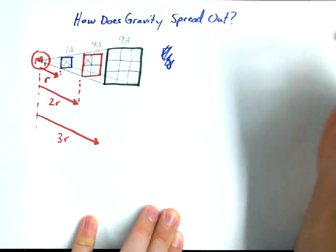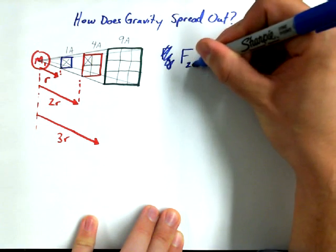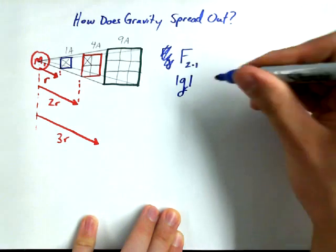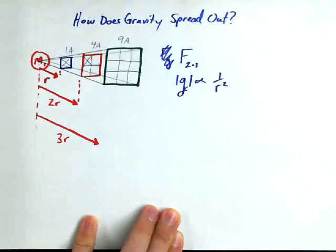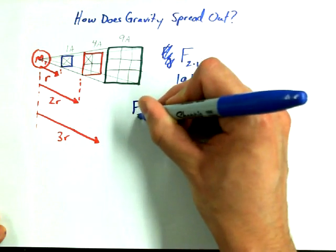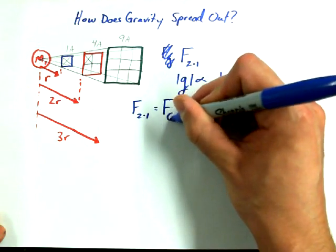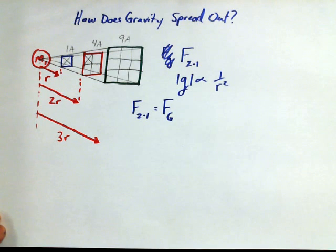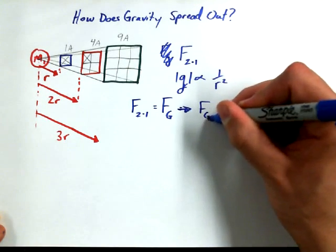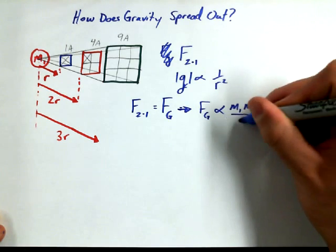We call it an inverse square law. Oh, I shouldn't say we weren't using that notation anymore. We were using force of mass one acting on mass two, or really in this case it's more appropriate to say the gravitational field intensity is proportional to one over r squared, an inverse square. So I want to borrow from some earlier discussion.